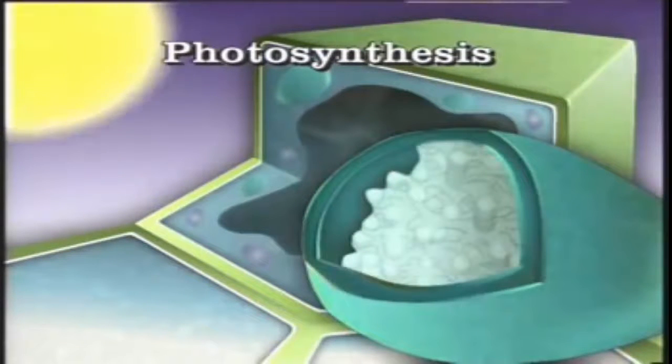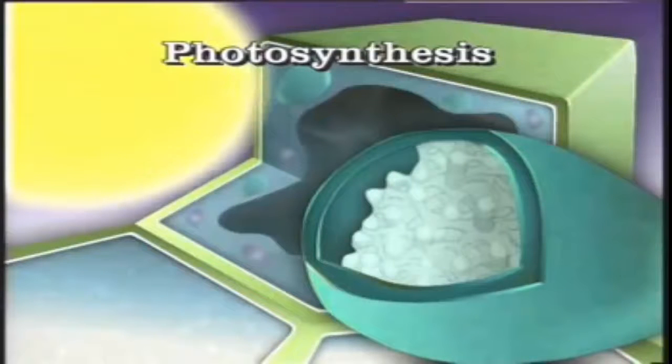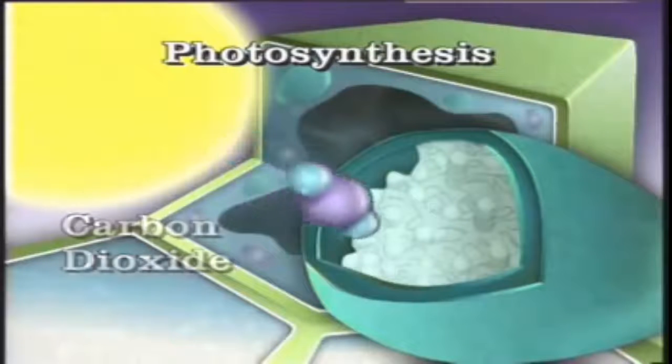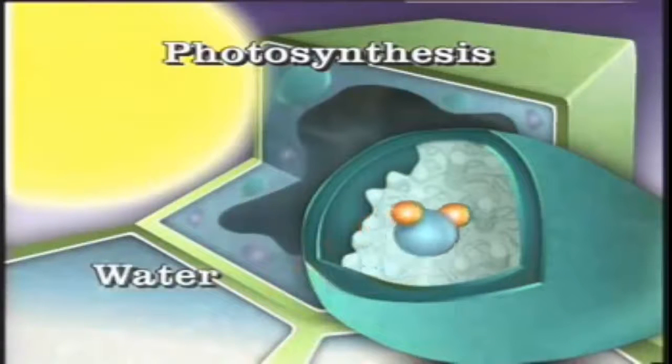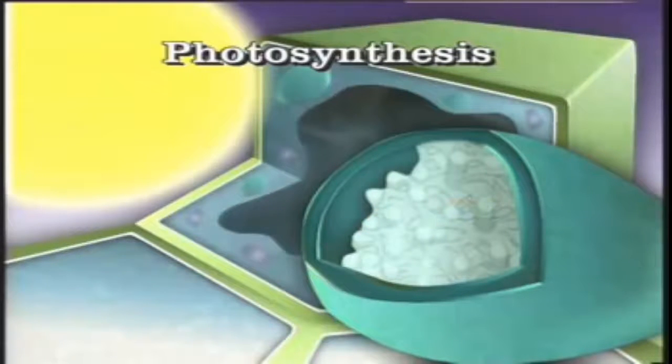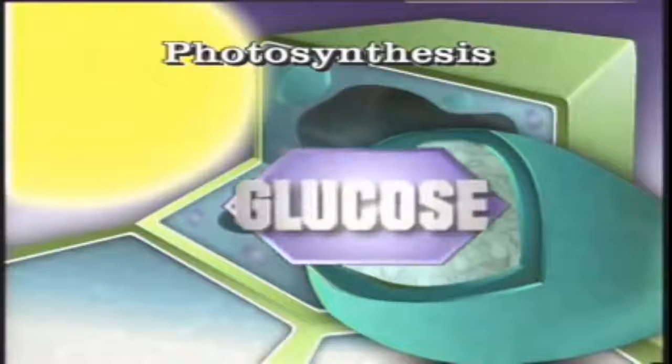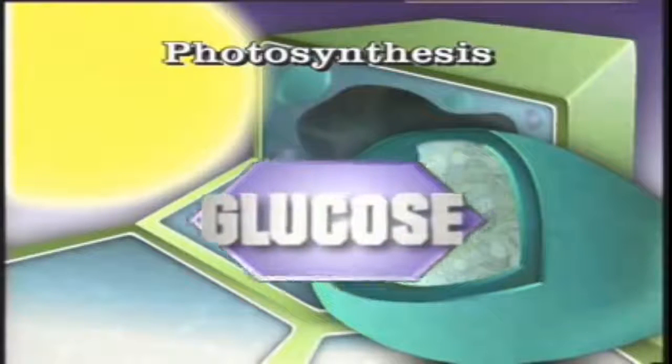Photosynthesis requires energy from sunlight. It also requires carbon dioxide gas from the atmosphere and water that for most plants comes from the soil. Inside chloroplasts, the energy of sunlight is used to convert carbon dioxide and water into glucose, a kind of sugar that is a plant's main food.